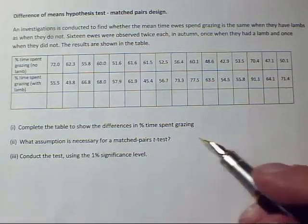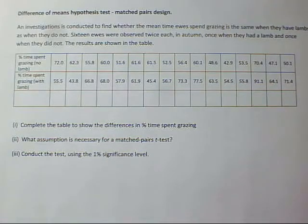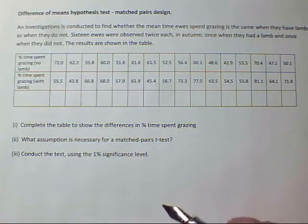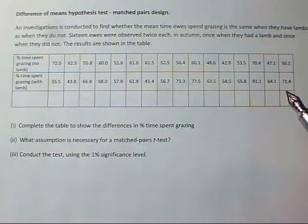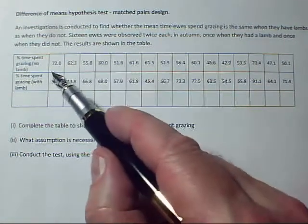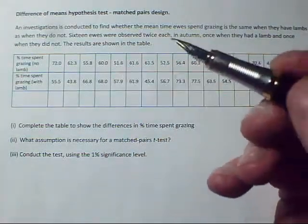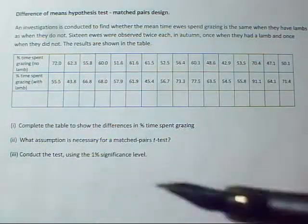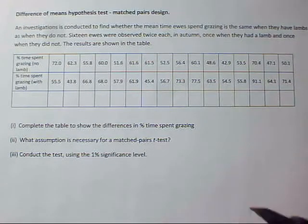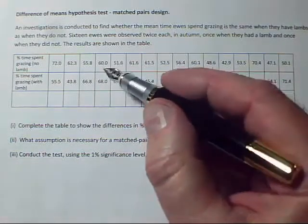With this data we've got information about ewes. Sometimes they don't have a lamb, sometimes they do. We want to see if there is evidence that they spend a different amount of time grazing when they don't have a lamb versus when they do. This is a matched pairs design — there are 16 ewes, and each column refers to two measurements for one ewe: once when it did have a lamb, and once at the same time of year (autumn) when it didn't. This is a good design because variation between different ewes shouldn't matter — I'm comparing each ewe with herself.